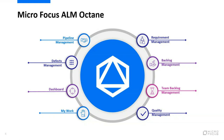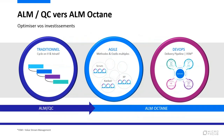Le périmètre d'Octane va bien au-delà de ce qu'on sait faire avec un outil comme ALM/QC. D'où la question et le sujet de ce webinaire : comment faire pour passer de l'un à l'autre, c'est-à-dire que mon organisation commence à avoir des projets qui étaient en mode traditionnel, cycle en V, et veut commencer à se mettre à l'agilité — peut-être en mode hybride avec du Scrum — jusqu'à arriver au DevOps et à l'intégration continue.